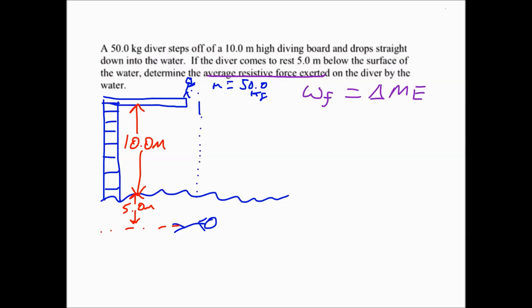In any kind of work or energy problem, we have to select an initial position, final position, and a zero line. The initial position of the diver is up at the top, the final position is down below, and we need to choose a zero line. This doesn't matter — you just have to be consistent throughout your problem. You could put your zero line at the surface of the water, or at the same level where the diver comes to rest. I'm going to put my zero line down here.